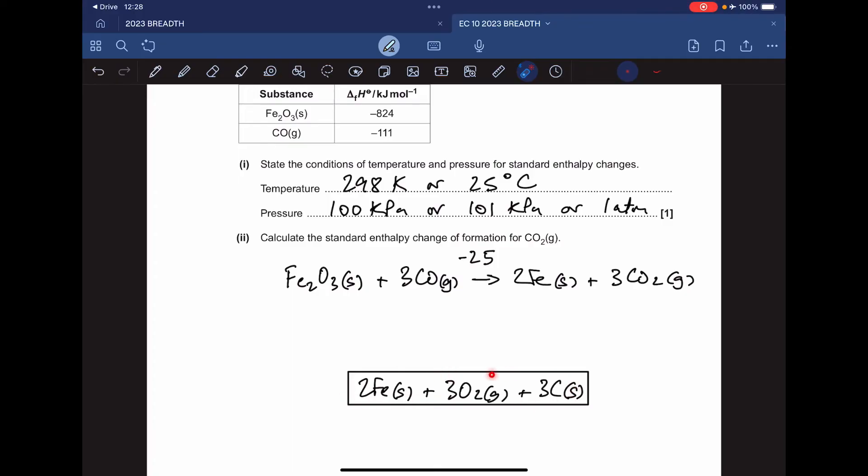All the elements involved in the species in the equation go in this box down here. What I need to do is create a cycle by drawing an arrow this way. That arrow represents the enthalpy changes of formation of one mole of iron(III) oxide and three moles of CO, which you can see in the table.